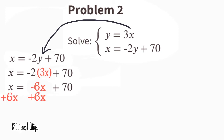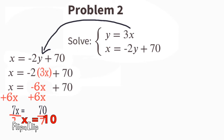Let's add 6x to both sides. Now we have 7x equals 0 plus 70, or 7x equals 70. Let's divide both sides by 7. 7x divided by 7 is x, and 70 divided by 7 is 10. So x equals 10.